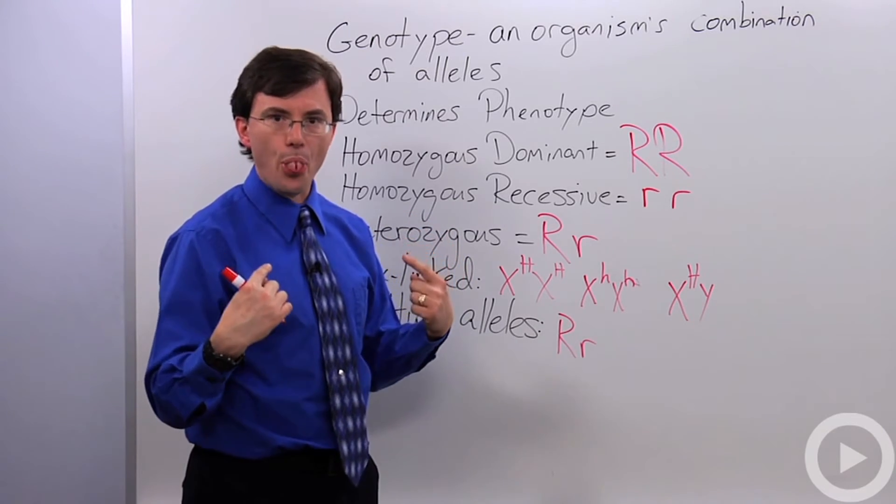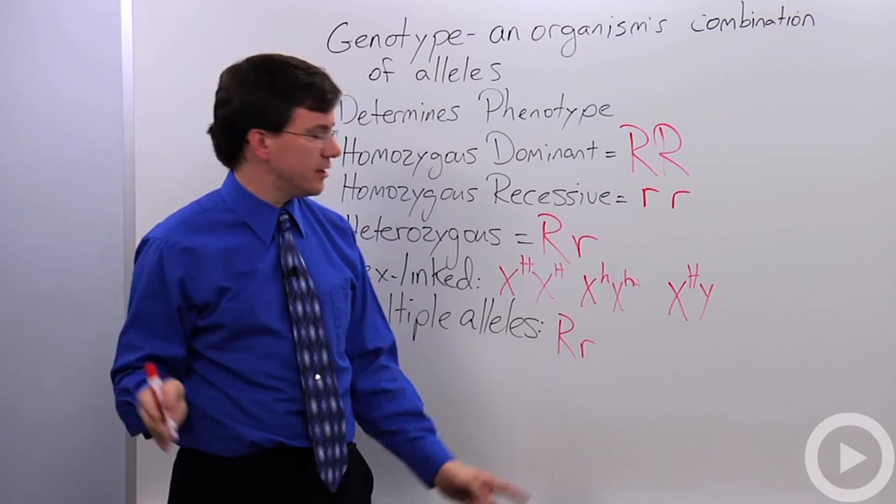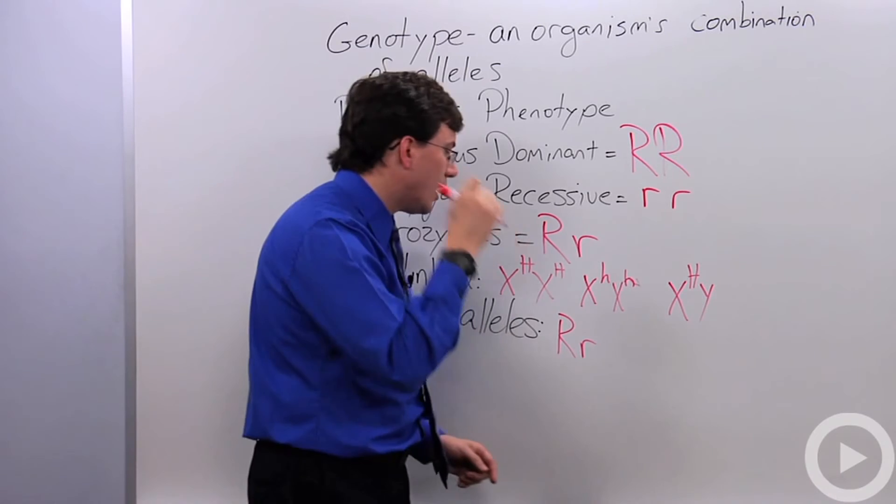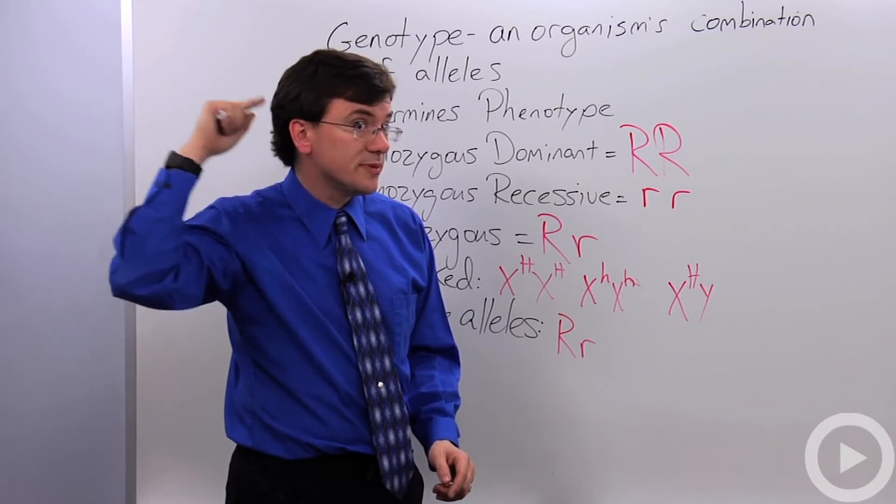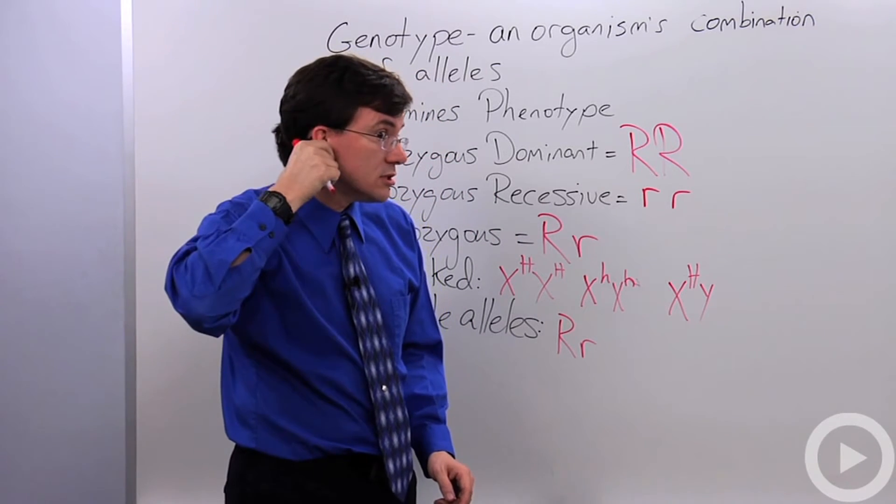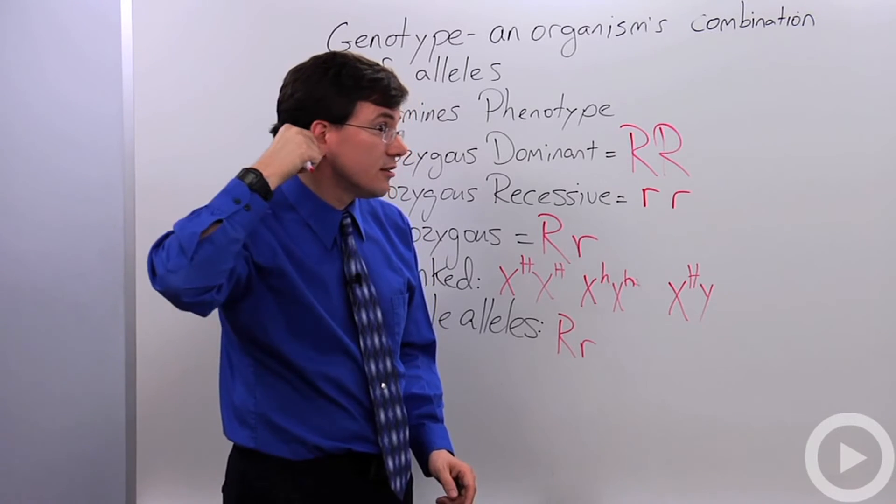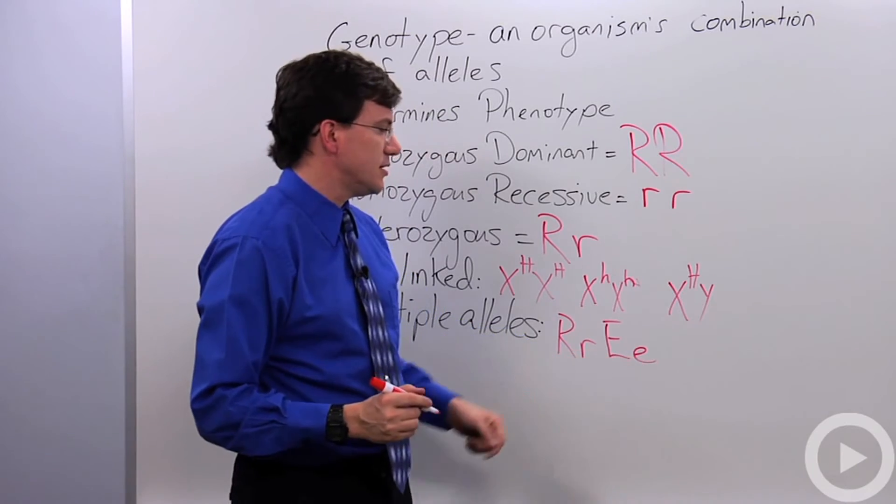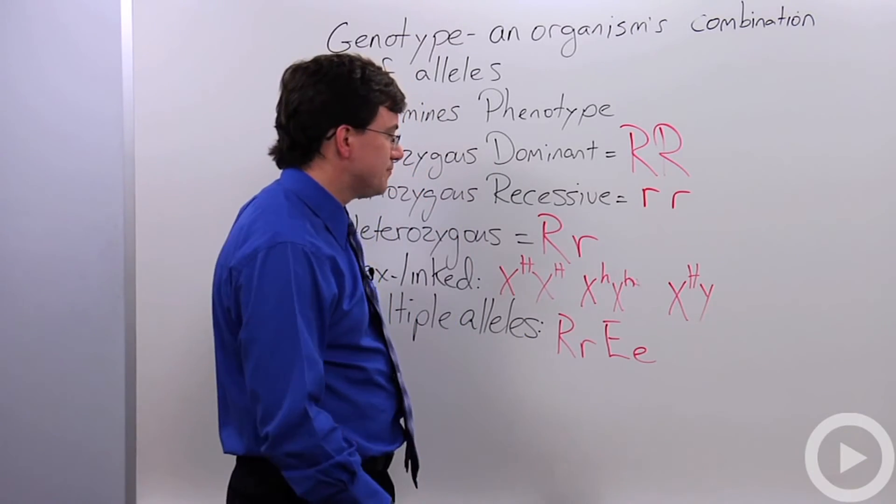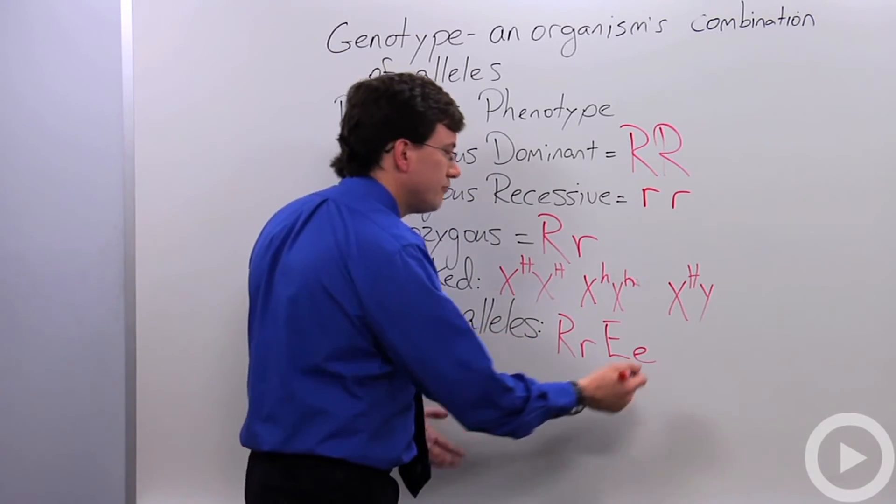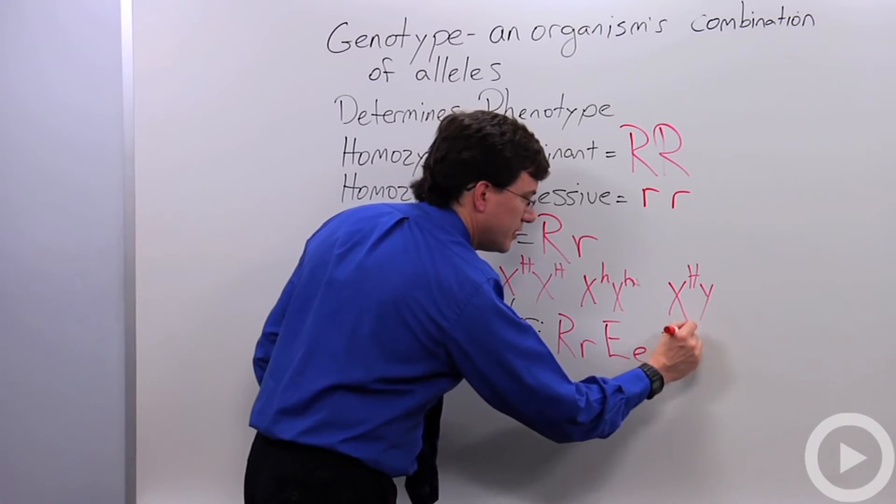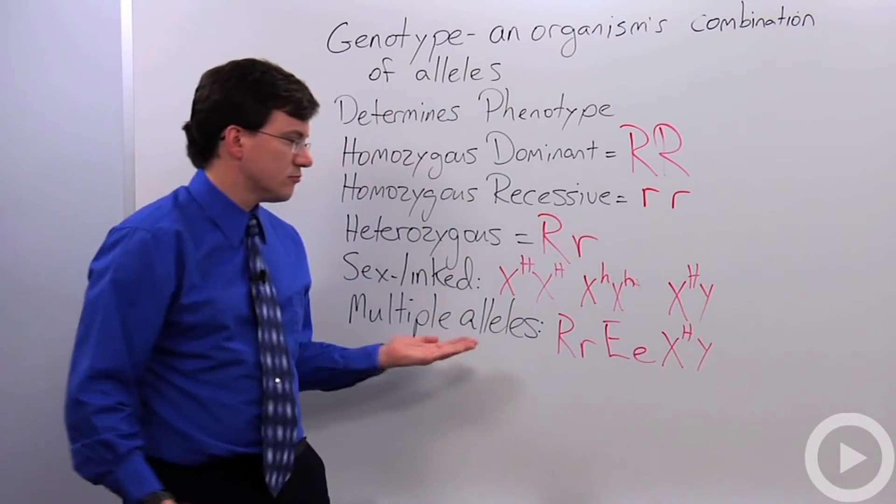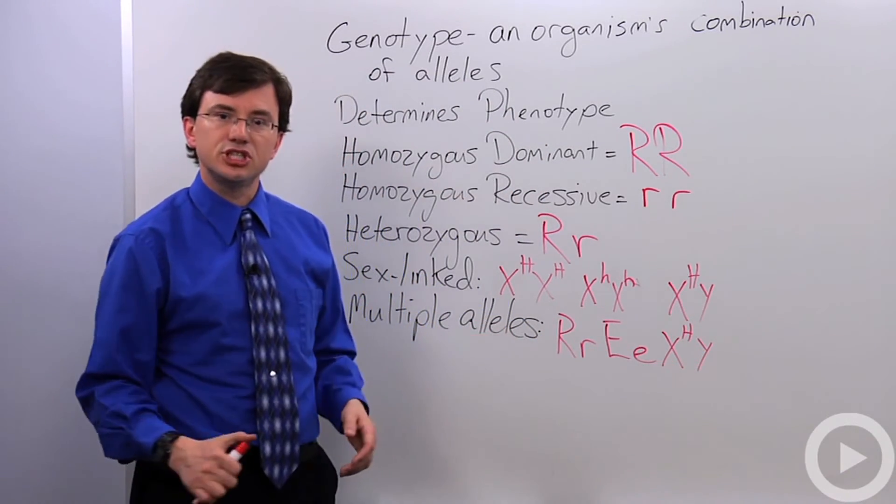I can roll my tongue, but my mom can't, so she gave me the little r. I have free earlobes, which means that they are not stuck into my jawline like this. They're free. So I've got a big E, but let's suppose my dad gave me his attached earlobe gene. But I am not a hemophiliac. So this is how you write out somebody's genotype.